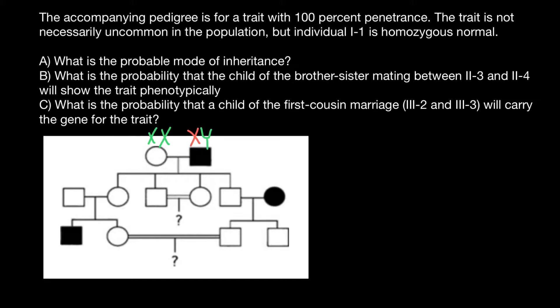This female here is going to inherit a normal X-chromosome from the mother's side and a defective X-chromosome from the father's side. But her phenotype is going to be normal because this is an X-linked recessive genetic disorder and she has one normal allele, which is dominant. So she is heterozygous, but her phenotype is normal. But as for her son here, her son got the defective X-chromosome from the mother.